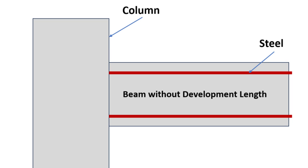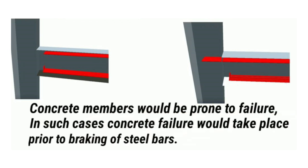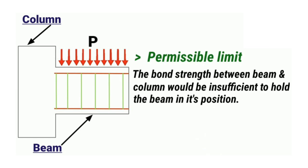But what happens if we don't provide the development length? Concrete members become prone to failure. In situations without sufficient development length, concrete failure would occur before the failure of steel. For instance, in a beam column system without development length, when subjected to a load beyond the limit, the bond strength between the beam and column would be inadequate, leading to the detachment of the beam.